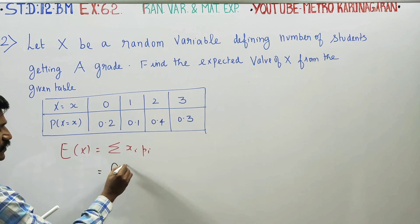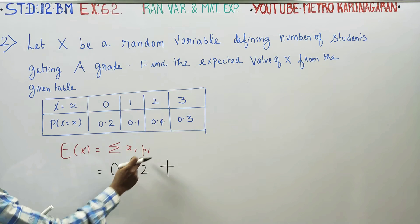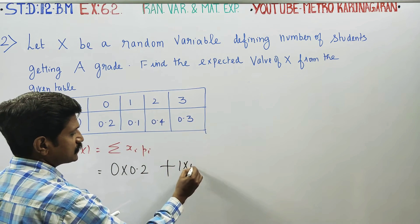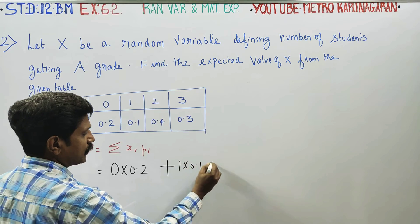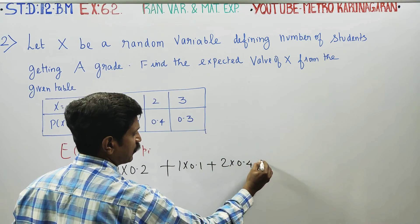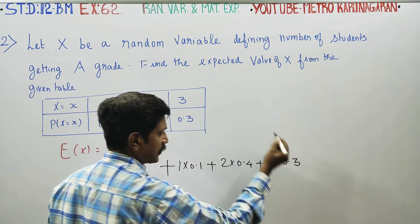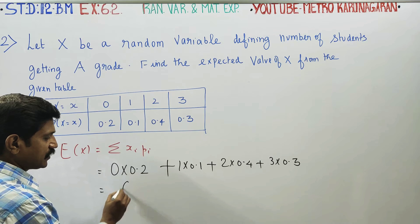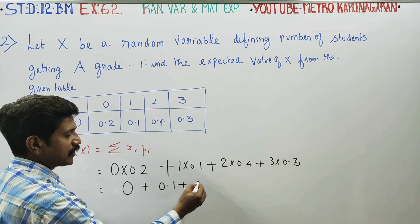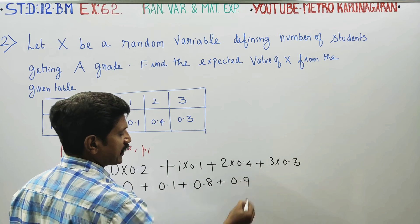So this is example 2.2: 0 into 0.2, plus 1 into 0.1, plus 2 into 0.4, plus 3 into 0.3. Sigma means addition. 0 into anything is 0; the first element gives 0.1; the second element gives 0.8; the third element gives 0.9.